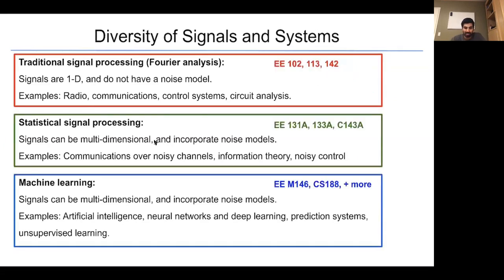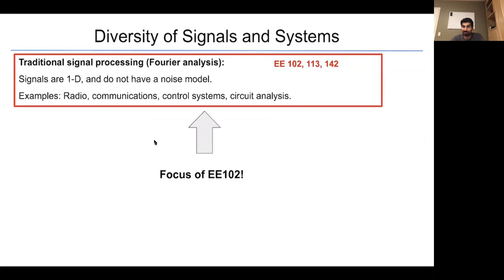However, we are mostly interested in the first aspect in this class, traditional signal processing or Fourier analysis, where signals are 1D and do not have a noise model. Again, examples, radio, comms, control, circuit, as well as music, which we will discuss in this lecture.